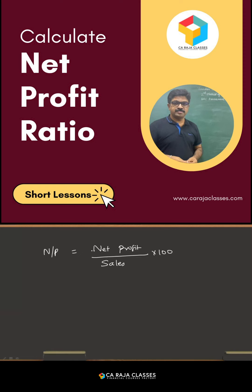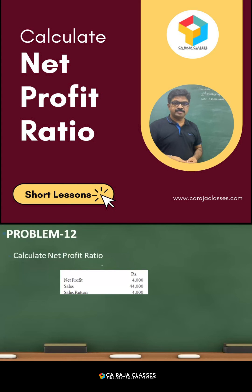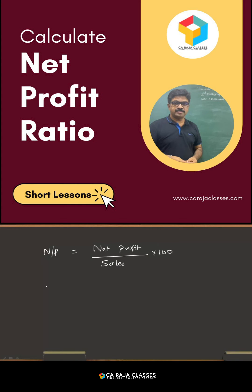So establishing a relationship between net profit and sales is very important. In this question, we have net profit directly, which is 4000. As far as the sales is concerned, we should take only the net sales, which is sales minus sales return. Sales is 44000 and sales return is 4000, so net sales is going to be 40,000.